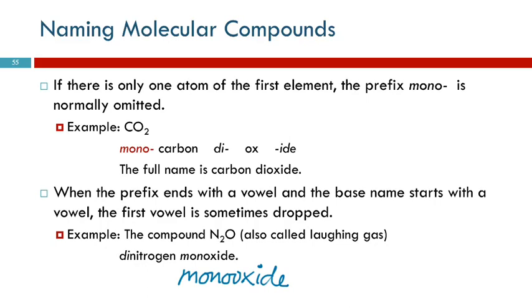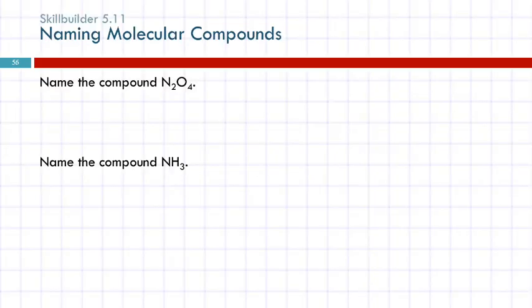So let's do a couple of examples. N2O4. First thing is identify it as a molecular compound. Look at the first element. Is it a metal? Nope. And then there's another element over here, also a nonmetal. Two nonmetals. Molecular compound.